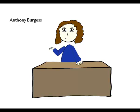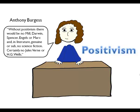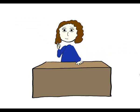Anthony Burgess argues that positivism is the basic premise of science fiction. He says that without positivism there would be no Mill, Darwin, Spencer, Engels or Marx and in literature, genuine or sub, no science fiction. Certainly no Jules Verne or H.G. Wells.